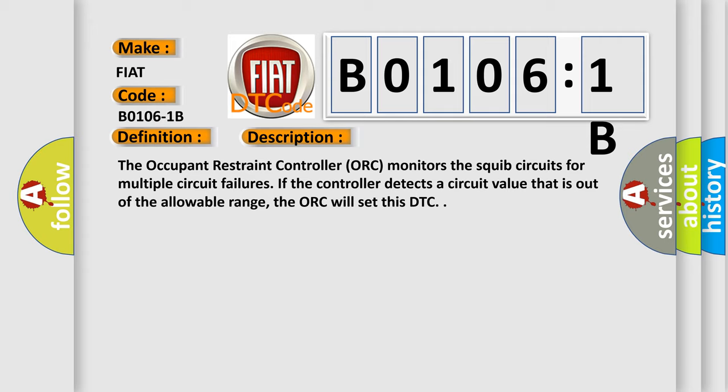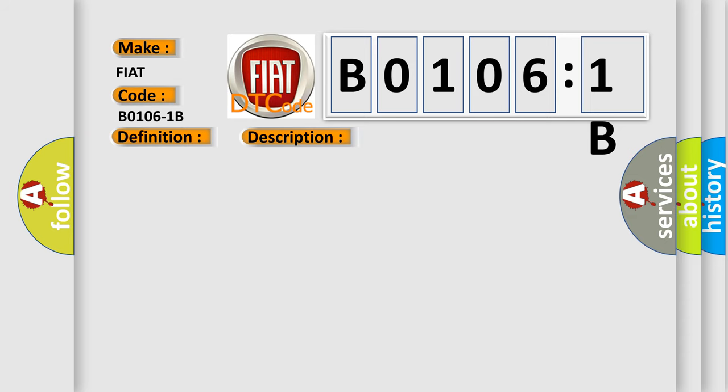The occupant restraint controller AUK monitors the SQUIB circuits for multiple circuit failures. If the controller detects a circuit value that is out of the allowable range, the AUK will set this DTC. This diagnostic error occurs most often in these cases.